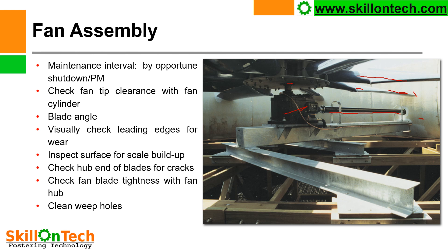Check the hub end of the blade for cracks. The junction of the hub and fan blade is a very weak portion of the fan blade assembly and may fail from this portion. If any crack is observed, the complete blade shall be replaced. Check fan blade tightness with the fan hub — the fan blade should be properly tightened with the fan hub, and fasteners shall be checked. Weep holes of the fan blade shall also be cleared.